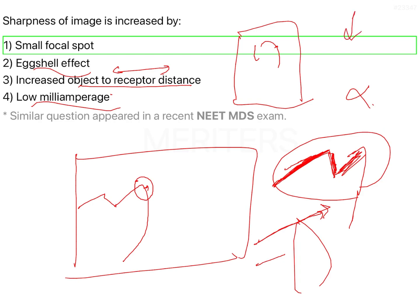And the current that passes through the entire machine should be of a higher milliamperage. Because if you have lesser current, there are going to be fewer electrons used, and as a result, the entire sharpness of the image will be compromised.